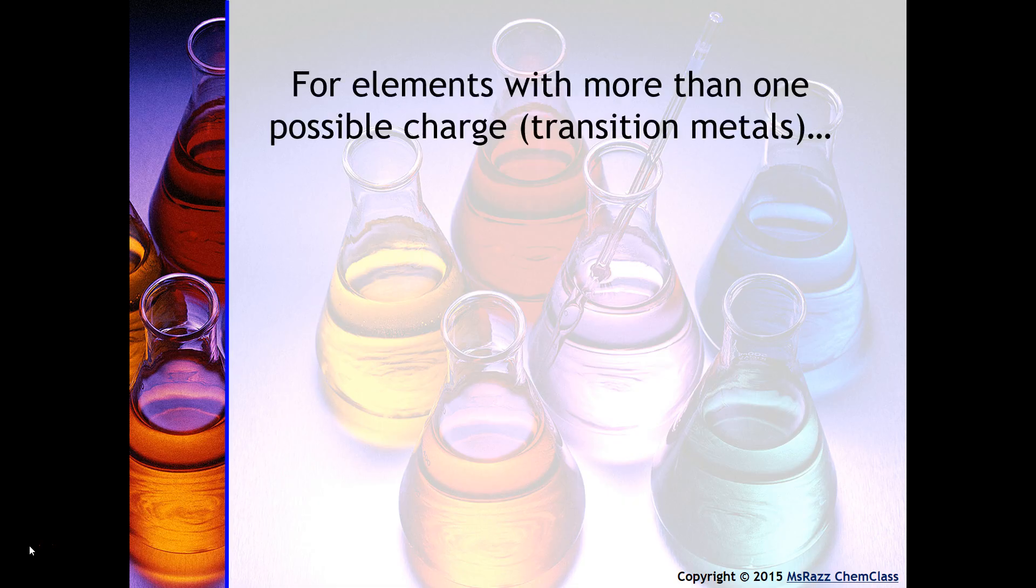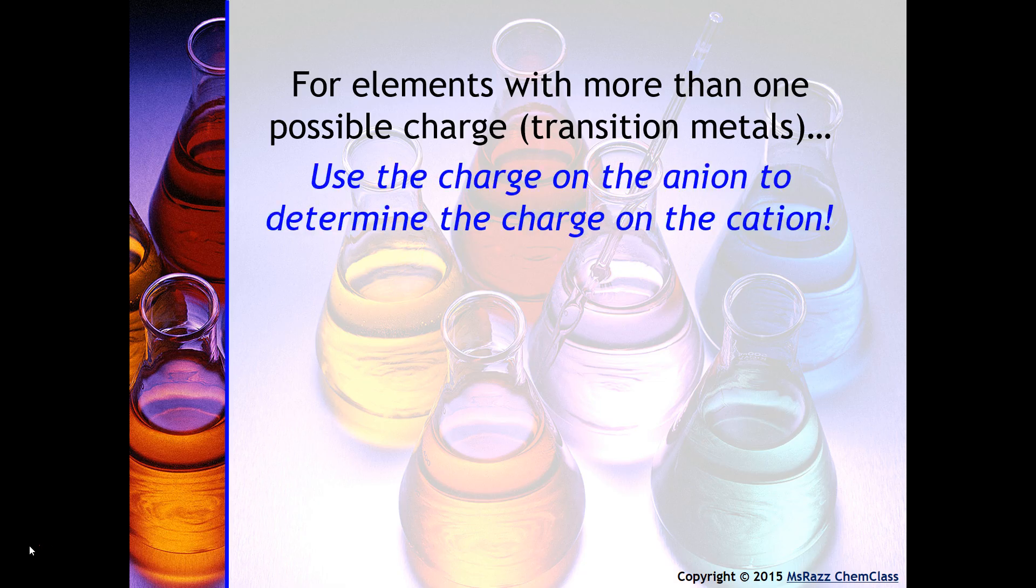For elements with more than one possible charge or the transition metals, you have to use the charge on the anion to determine the charge on the cation. So for example, we know that iron has two possibilities: it could be iron with a plus two charge or iron with a plus three charge. We need to figure out what it is by using the anion, or the CrO4 in this case. Notice that the charge on the chromate is minus two. There are three of them, and therefore on this side of the chemical formula there is a minus six charge.